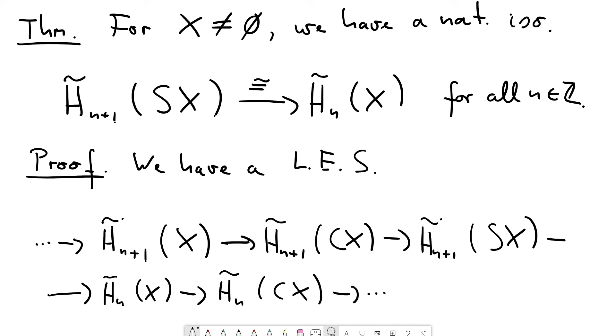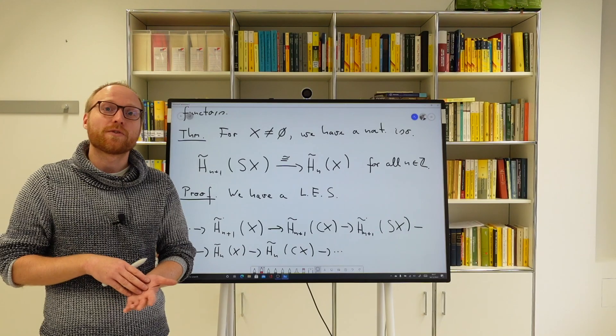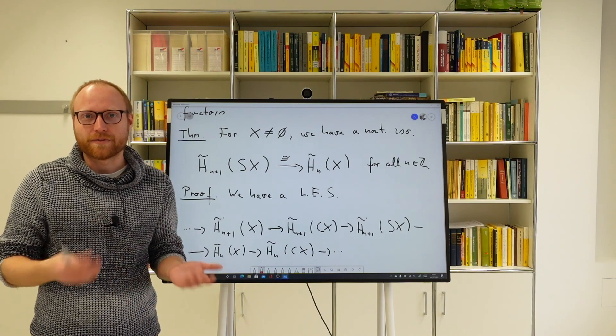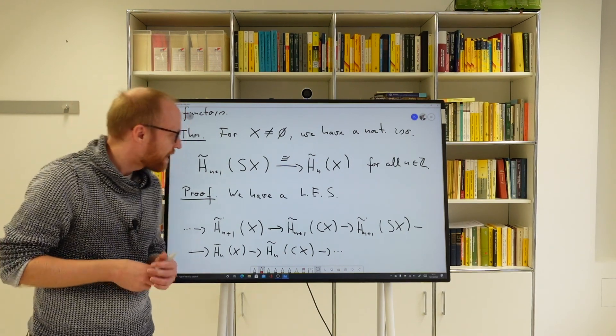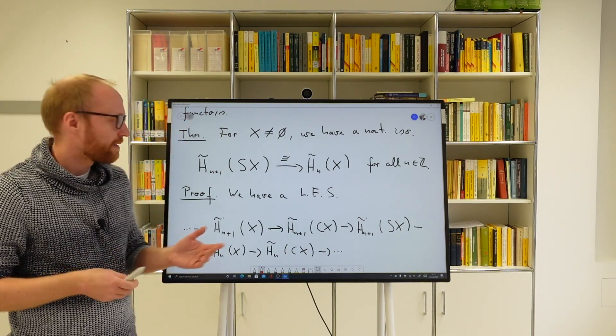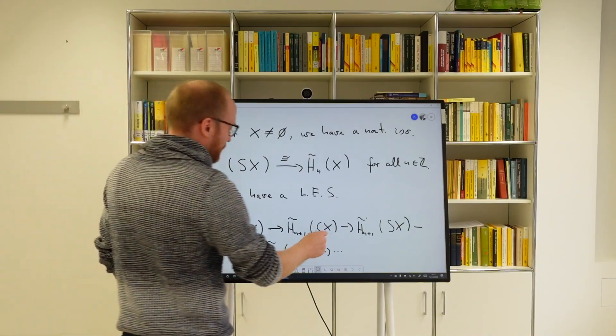And this is all we need because the cone now has the property that the space X deformation retracts onto the cone tip. Yeah, that's the point of the cone construction. Yeah, every space gets into a contractible one by this cone construction. And therefore this, by homotopy invariance, this reduced homology of the cone is just the same thing as the reduced homology of the point.